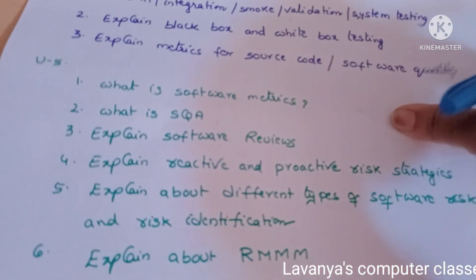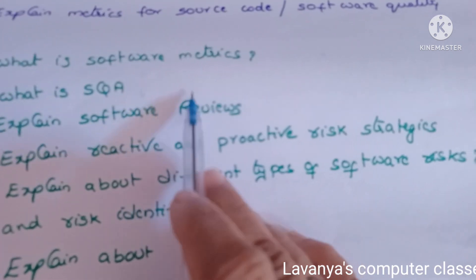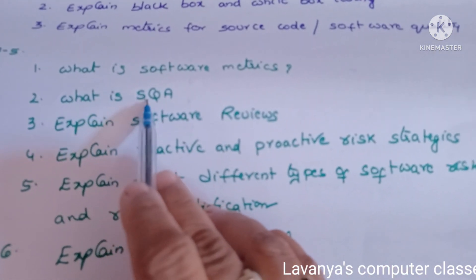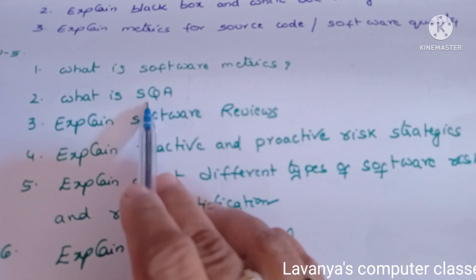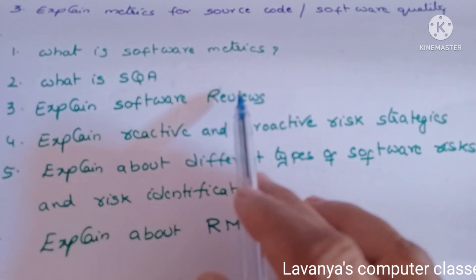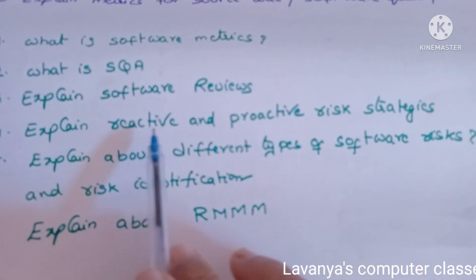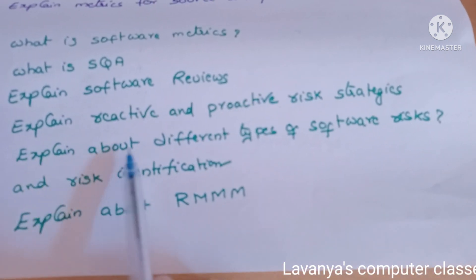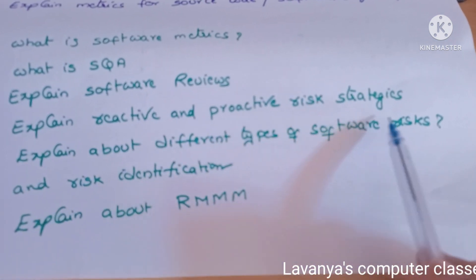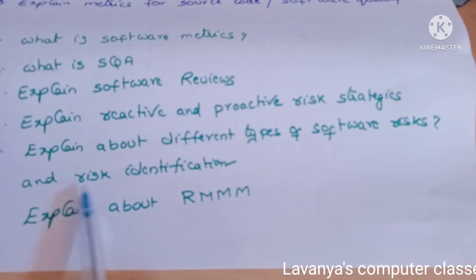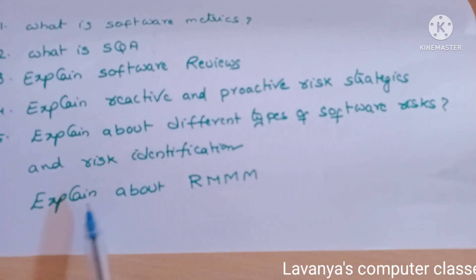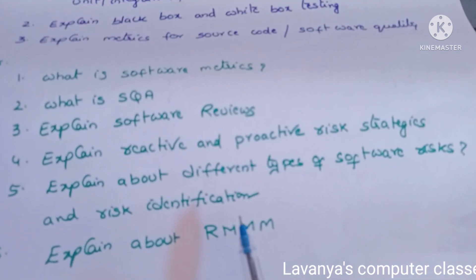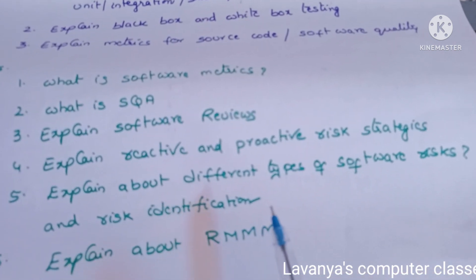Unit five important questions: what is software metrics? What is SQA? — an important question. Next, explain software reviews. Explain reactive and proactive risk strategies. Explain different types of software risks and risk identification. And a very very important question: explain about RMM. These are the important questions in unit five.